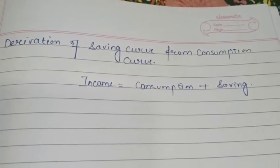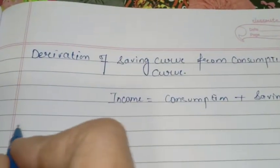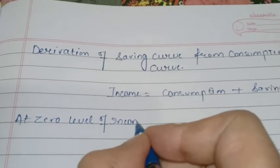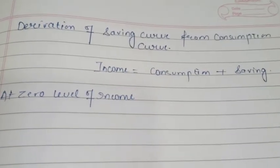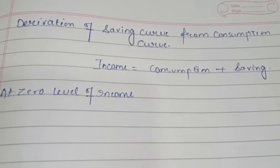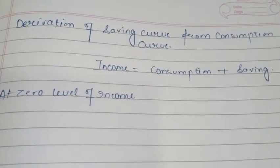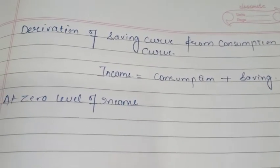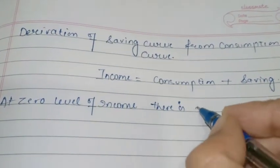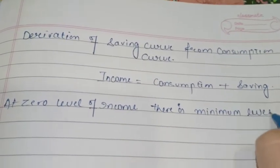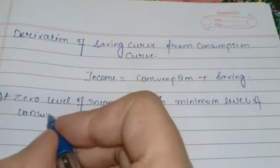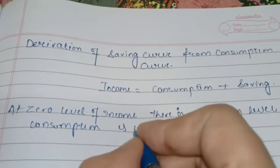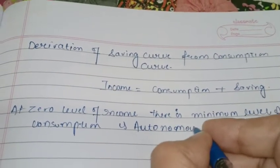Consumption and saving both are dependent on income. So let's start with the derivation. At zero level of income, when you are earning nothing — this is COVID-19 time, most people are not earning — that doesn't mean they are not doing consumption or not spending on minimum needs. At zero level of income, although we don't live a luxurious life, we will still spend on goods and services which are essentials of life. So at zero level of income, there is a minimum level of consumption, and this is what we call our survival.